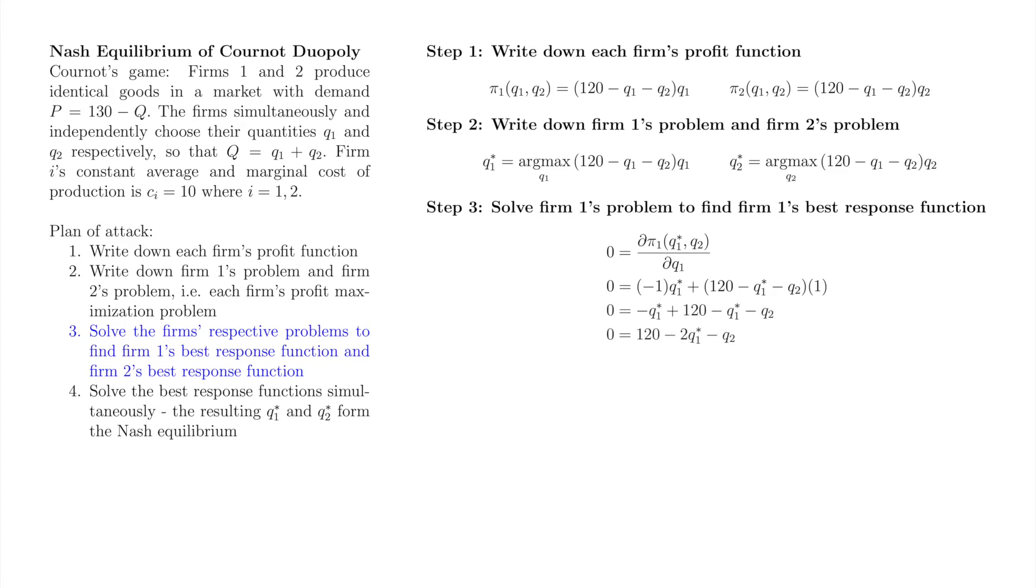Now we need several lines of algebra to solve for q1 star, which equals 120 minus q2 all over 2.